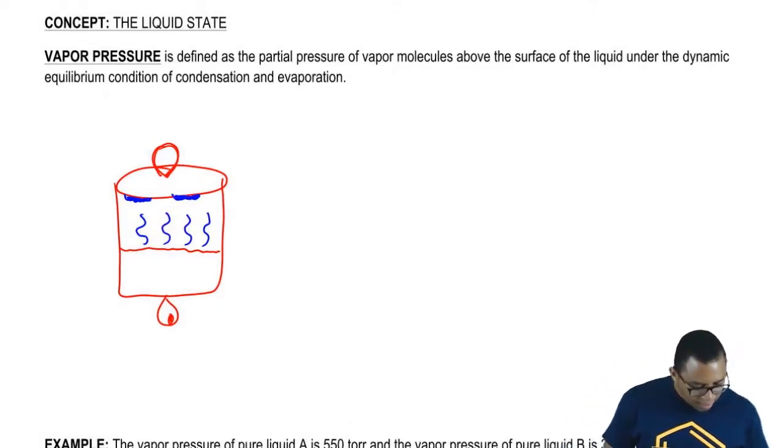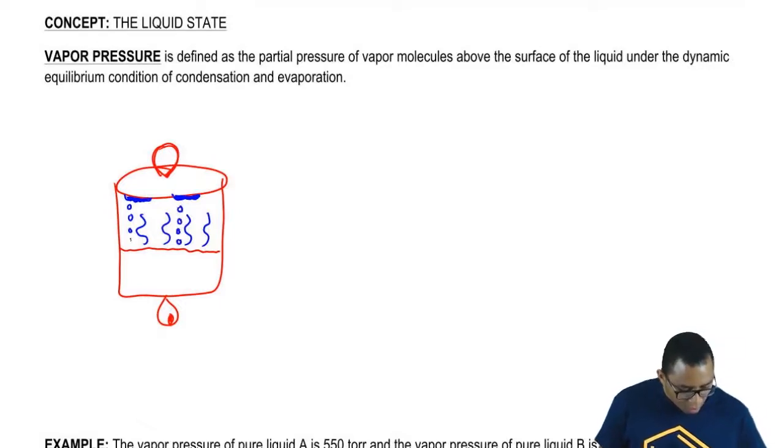So what's going to happen now is they're going to start dripping down back into the boiling water. Only to be vaporized once again into gas, go back up, condense again, drop back down, vaporize again, go back up. So this is a continuous process.